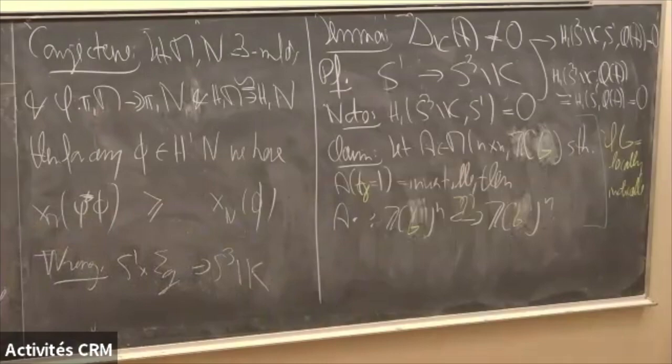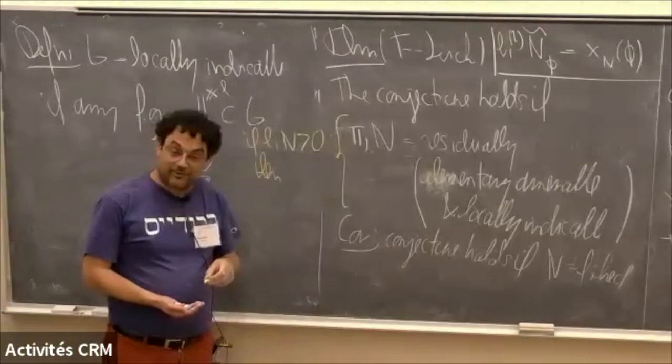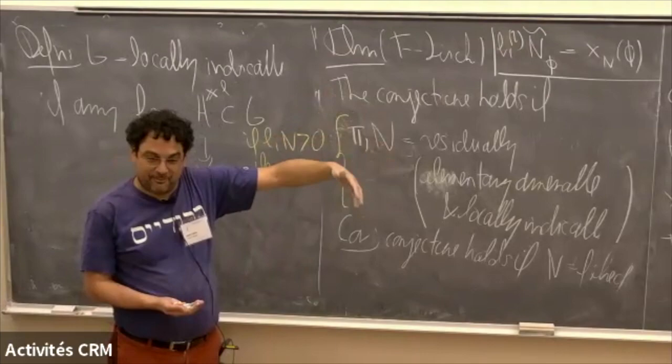Let me finish with a conjecture: if b₁(N) > 0, then π₁(N) is residually — with the property that every non-trivial element survives in a quotient that is elementary amenable and locally indicable. I don't know whether to believe this conjecture. I learned from Cameron Gordon that it's better to state things as conjectures rather than questions, because then it's better for students to say they disproved a conjecture than to say they answered a question negatively. So if you have a solution, please talk to me. Thank you.